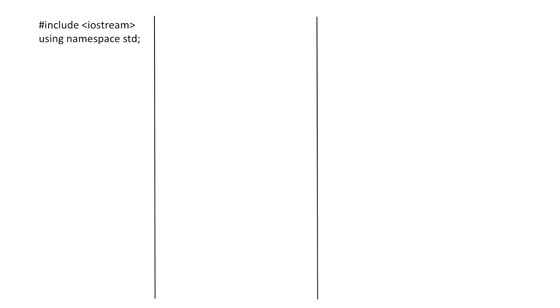Now let's see how we will implement all this in C++. We start our program by including the header file iostream and using the standard namespace. Then we create the basic structure of our node, which consists of an integer data and a pointer link of type node. Then we create our top pointer and initialize it to null, because initially our linked list is empty.